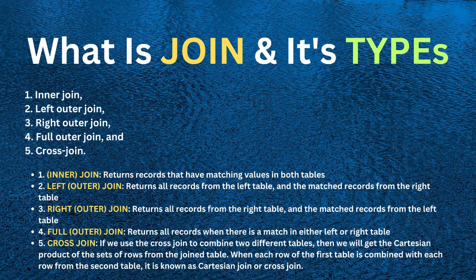RIGHT OUTER JOIN (also called RIGHT JOIN) returns all records from the right table and the matched records from the left table. FULL OUTER JOIN returns all records when there is a match in either the left or right table. CROSS JOIN combines two tables and returns the Cartesian product of the rows — each row of the first table is combined with each row of the second table. These are the five types of JOINs in SQL.